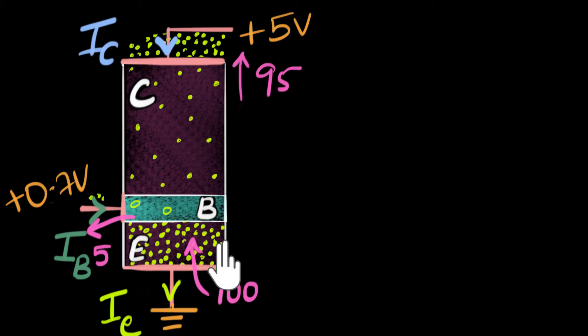So these are the three currents that we have in a transistor. And if you look at these numbers carefully, we can even identify the connection between these three currents. So I want you to pause the video and just see if you can find out what's the connection between IC, IB, and IE.